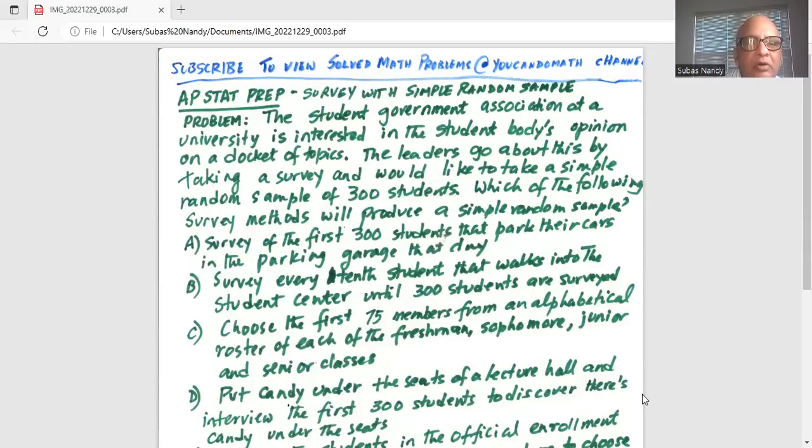The leaders go about this by taking a survey and would like to take a simple random sample of 300 students. Which of the following survey methods will produce a simple random sample?